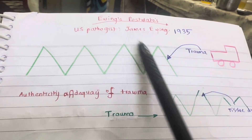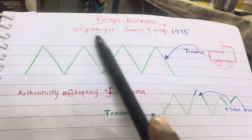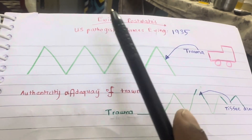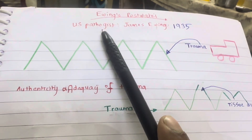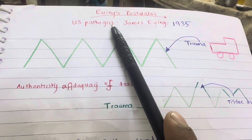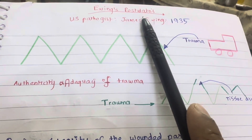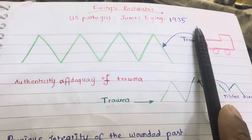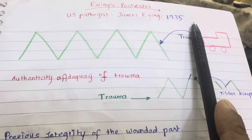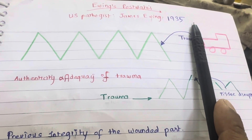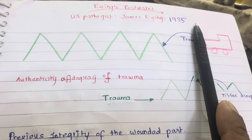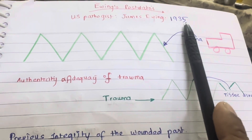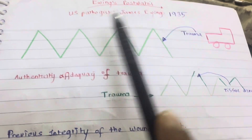Ewing Postulate, postulated by the US pathologist James Ewing in 1935. It is better known for Ewing sarcoma.